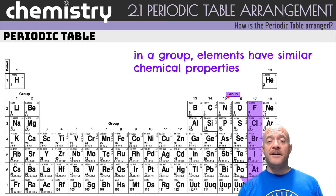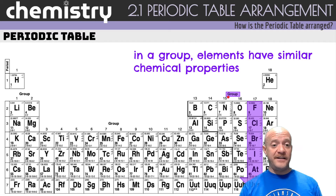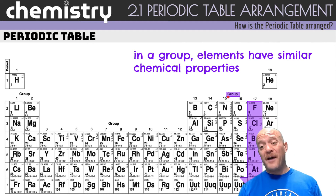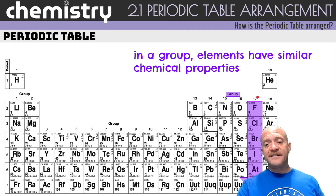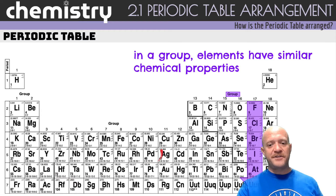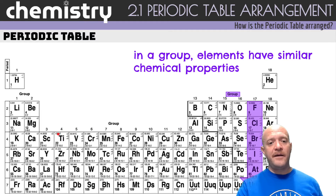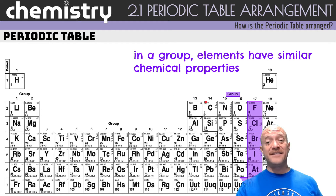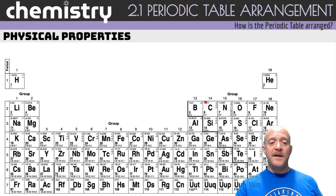The periodic table has groups arranged according to their chemical properties — which is exactly what Mendeleev noticed. The reason elements in a group have similar chemical properties is because of their valence electrons. Groups 1, 2, and 13 through 18 all have the same number of valence electrons. Groups 3 through 12 are a bit more complex and we'll discuss those in the future.